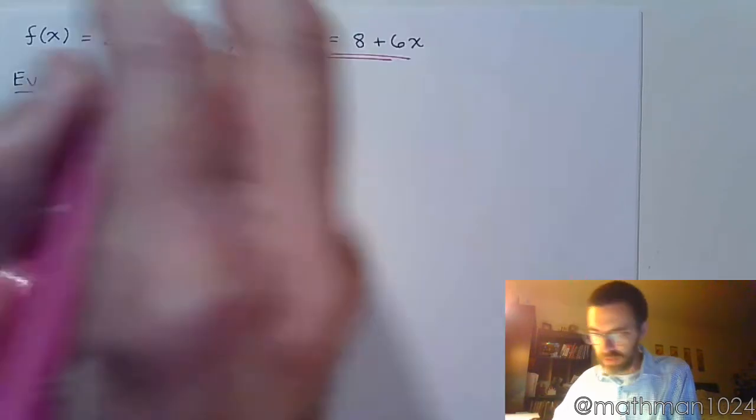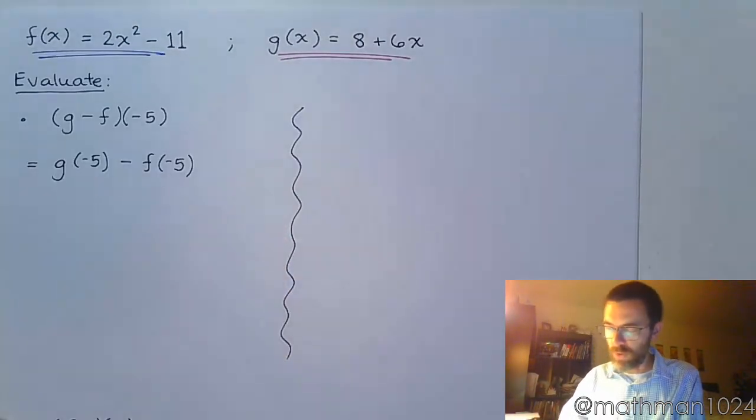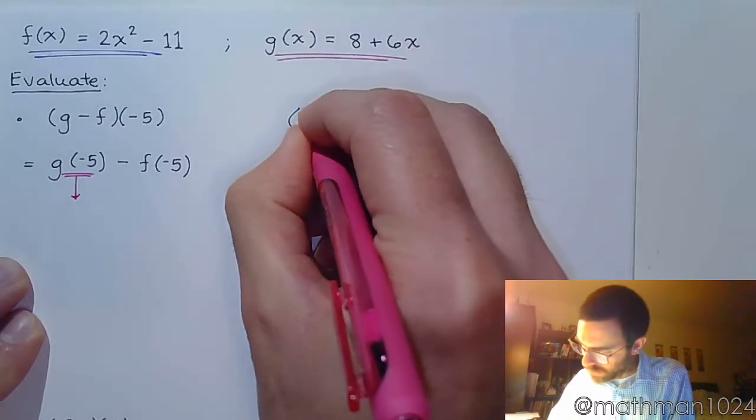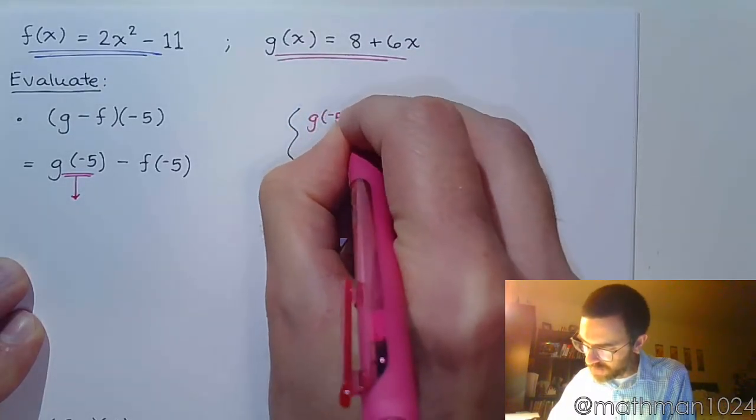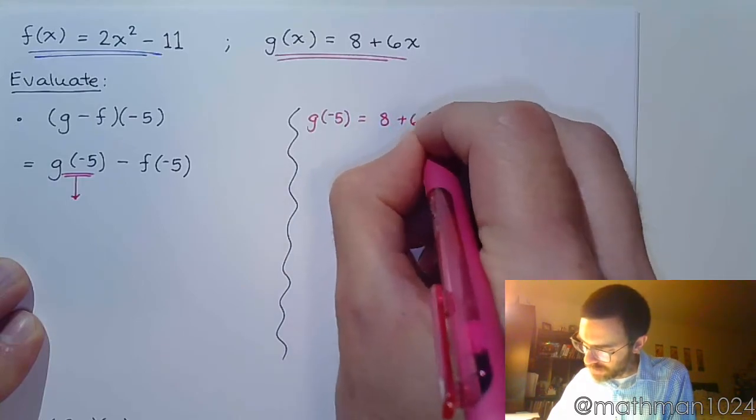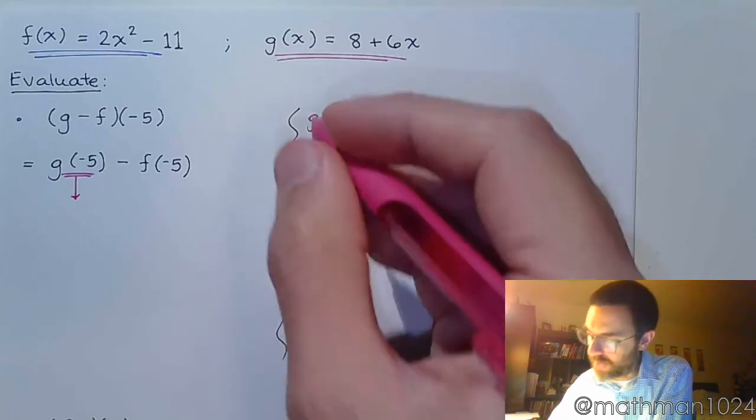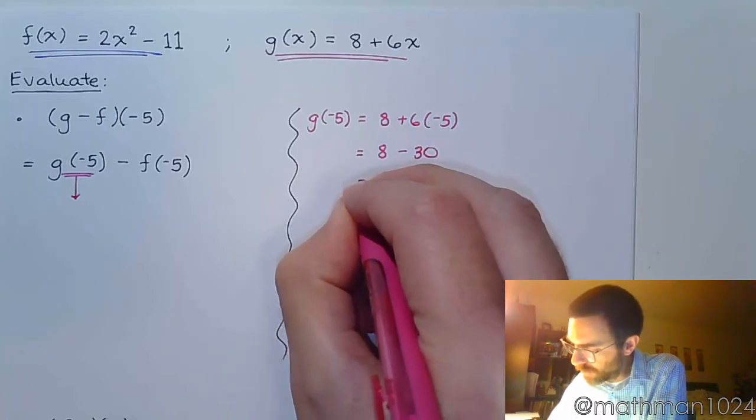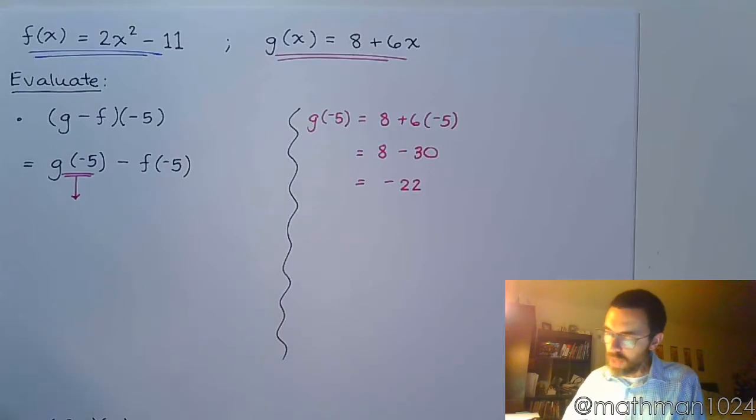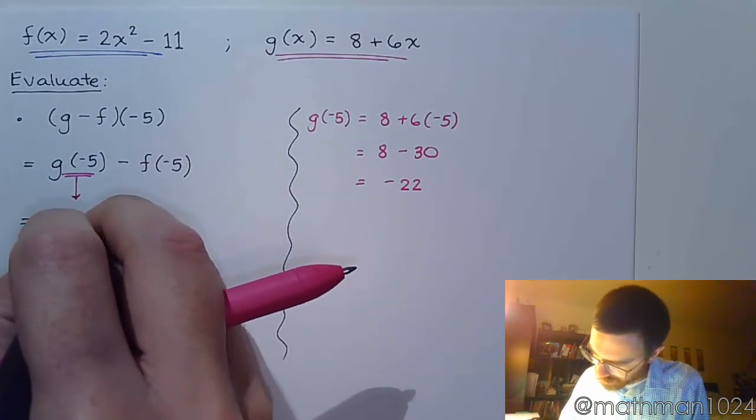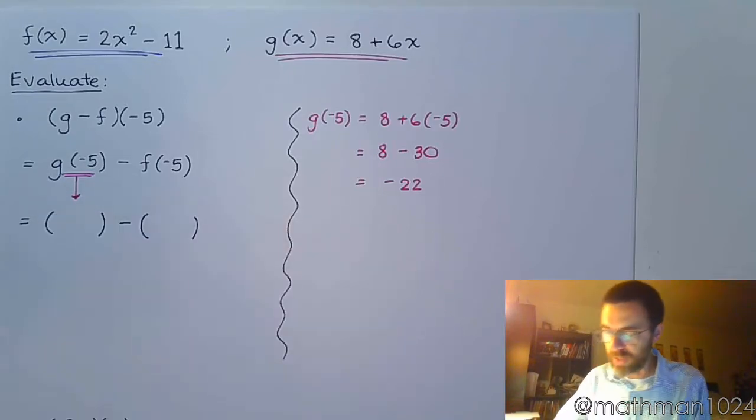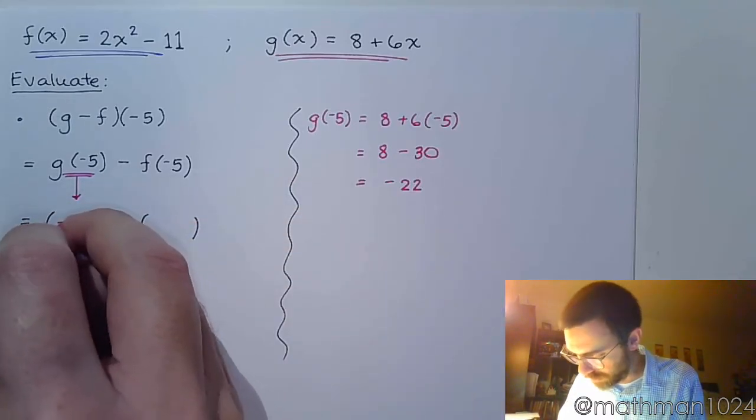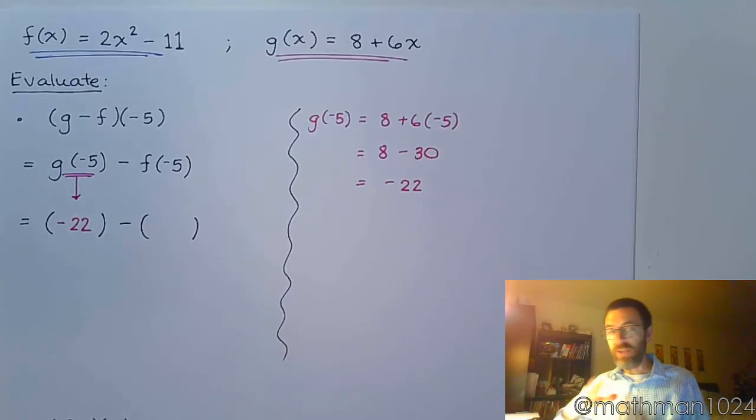So using the same colors that we did before, pink for g, and I'm going to do this one first. So let's see what this guy becomes. So off to the side, g of negative 5. So 8 plus 6, instead of x, we write negative 5. So 8 minus 30 equals negative 22. So in this next step here, and yes, I'm going to use parentheses here because it's almost like you're substituting. So instead of writing g of negative 5, you write what we got, which is negative 22. And that's it for that part.